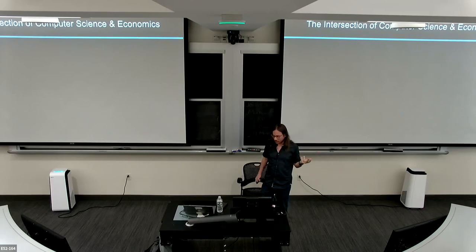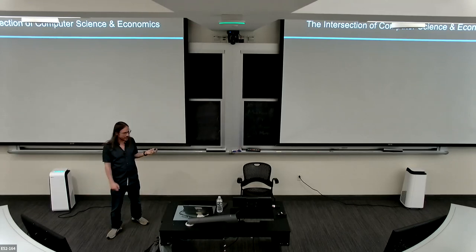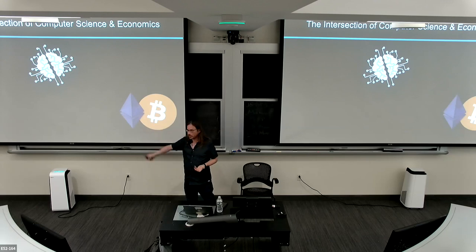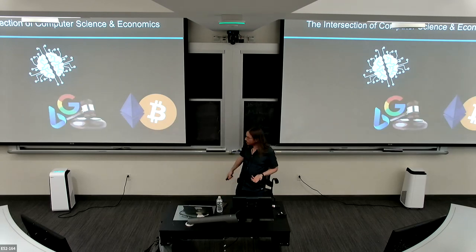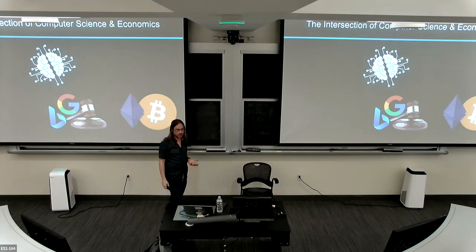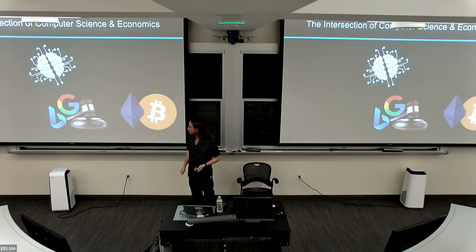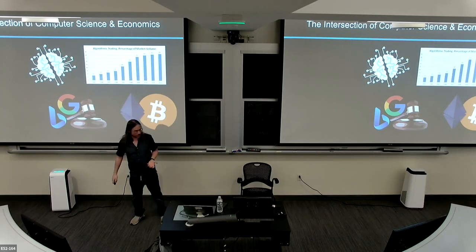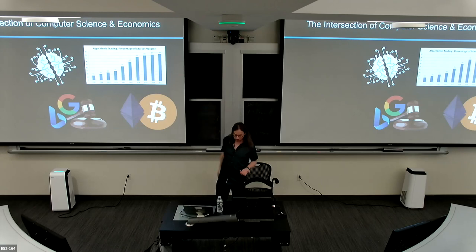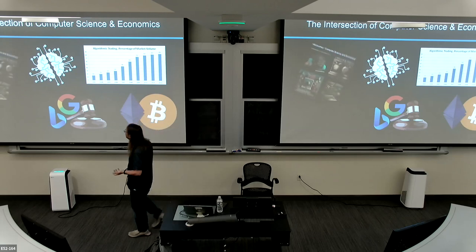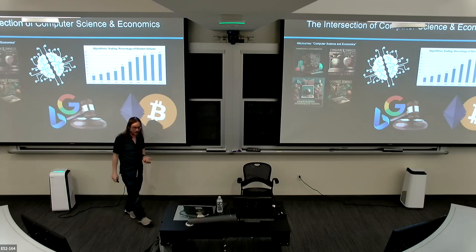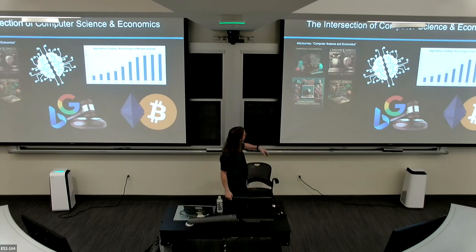When you think about things that could lie at the intersection of computer science and economics, you probably think about machine learning, cryptocurrencies like Bitcoin or Ethereum, ad auctions — whenever you search on Google, there's a split-second auction for the right to show you ads — or algorithmic trading, high frequency trading, which is becoming more and more significant. I also asked Midjourney to visualize computer science and economics. Apparently lots of fruit — maybe agricultural economics. The language also looks interesting.